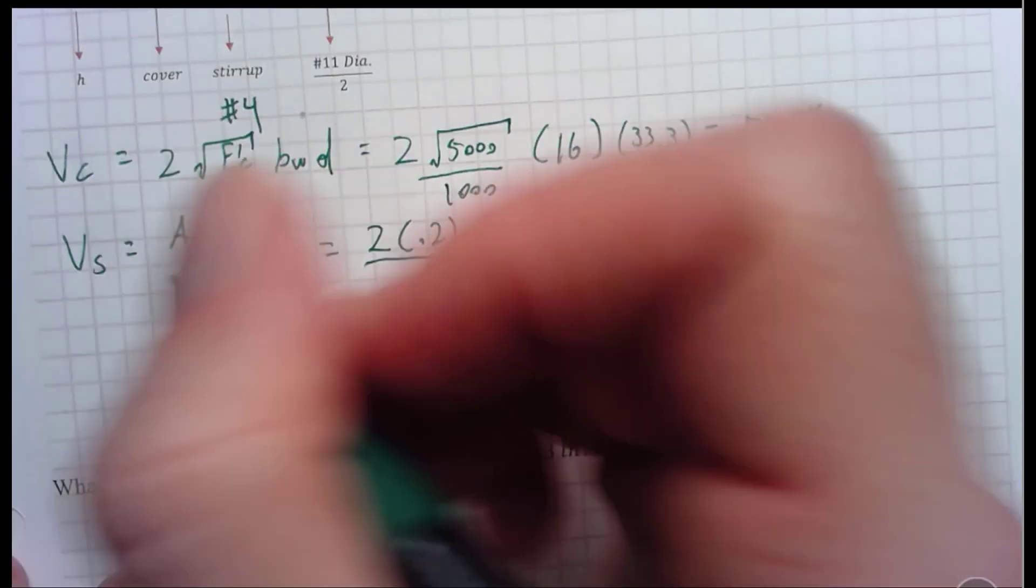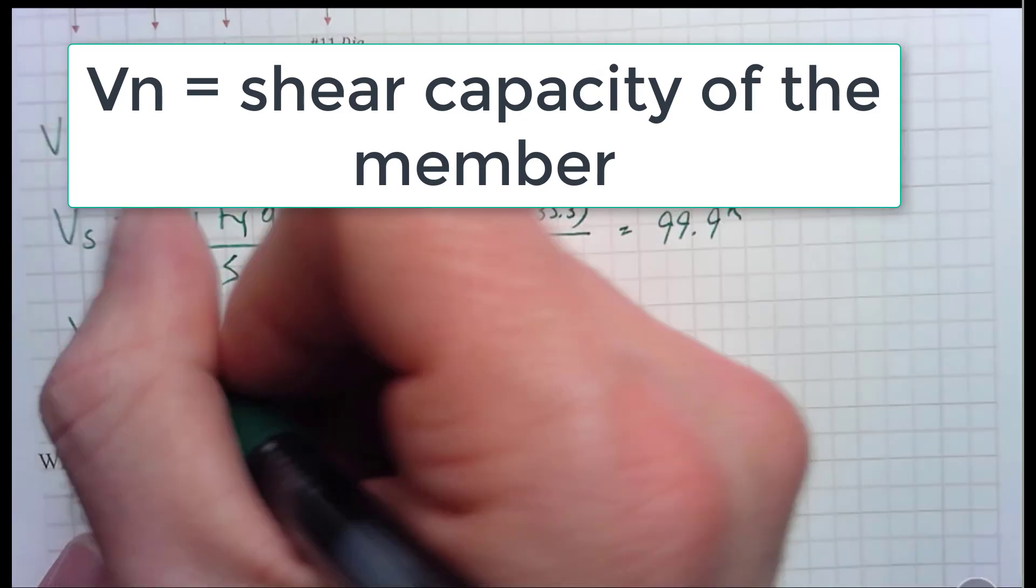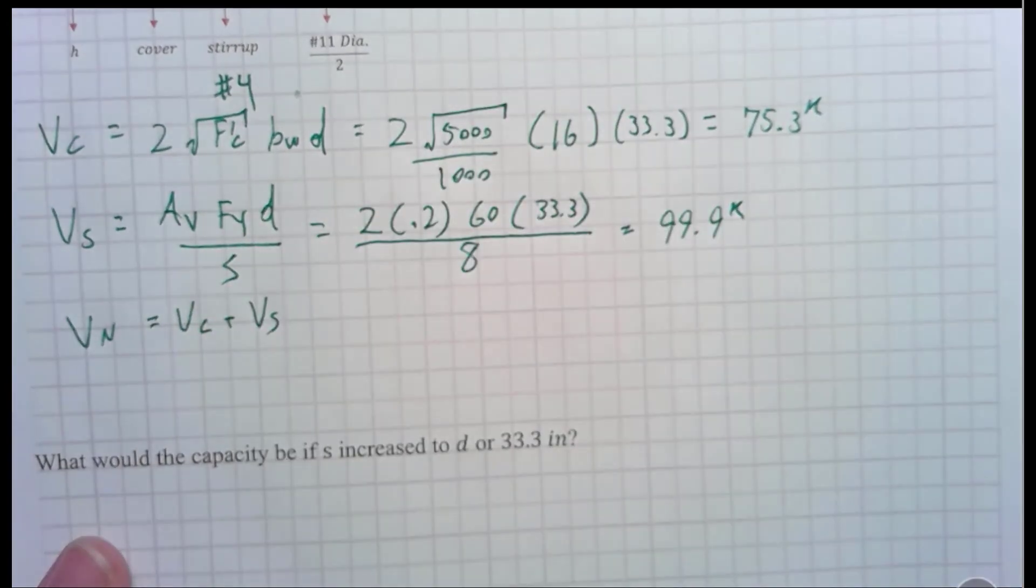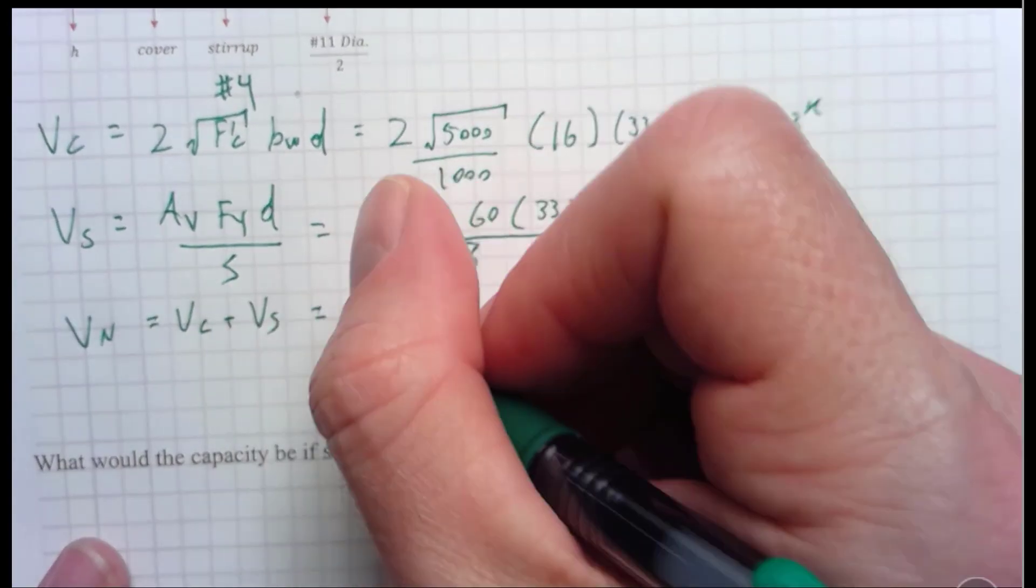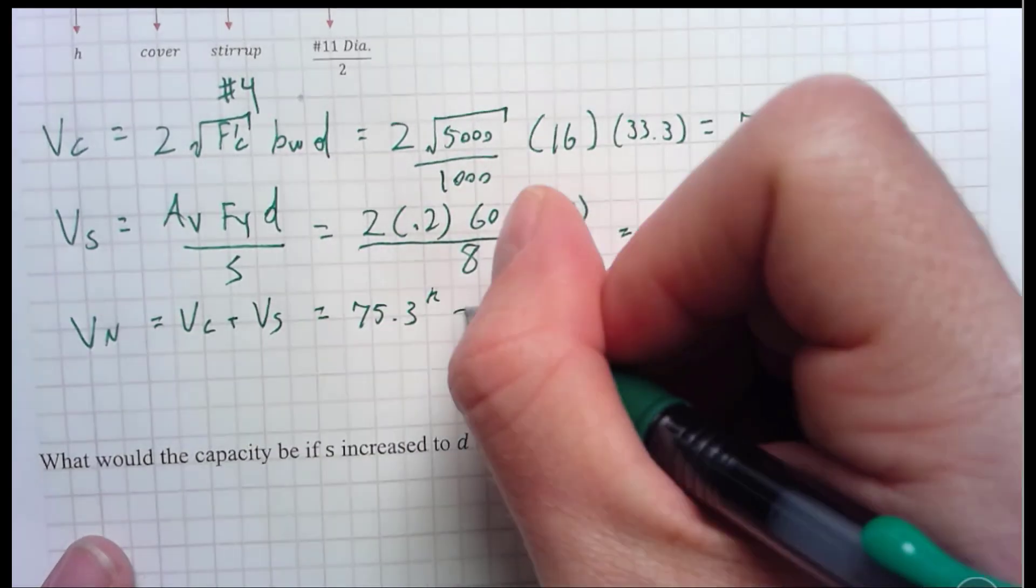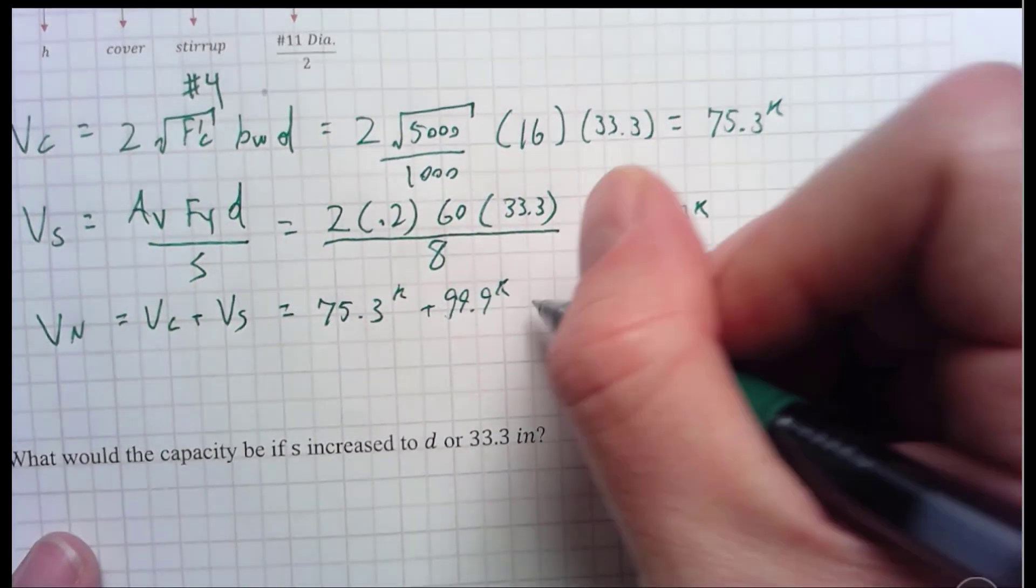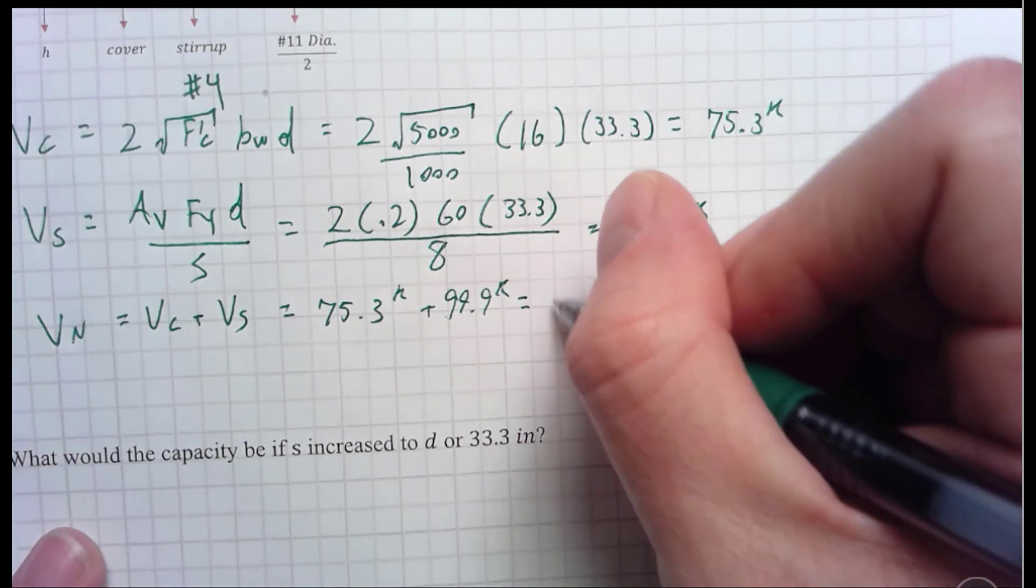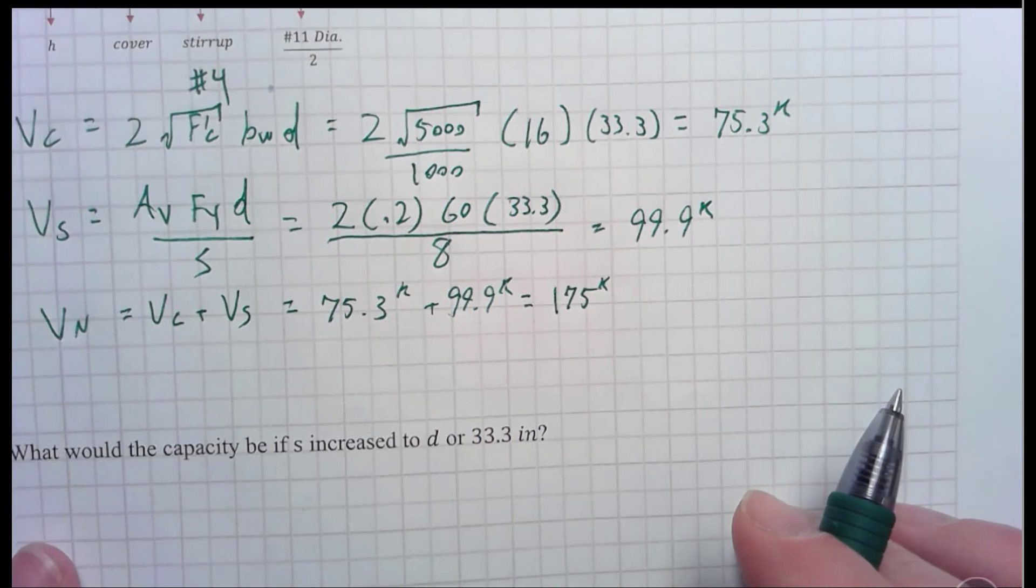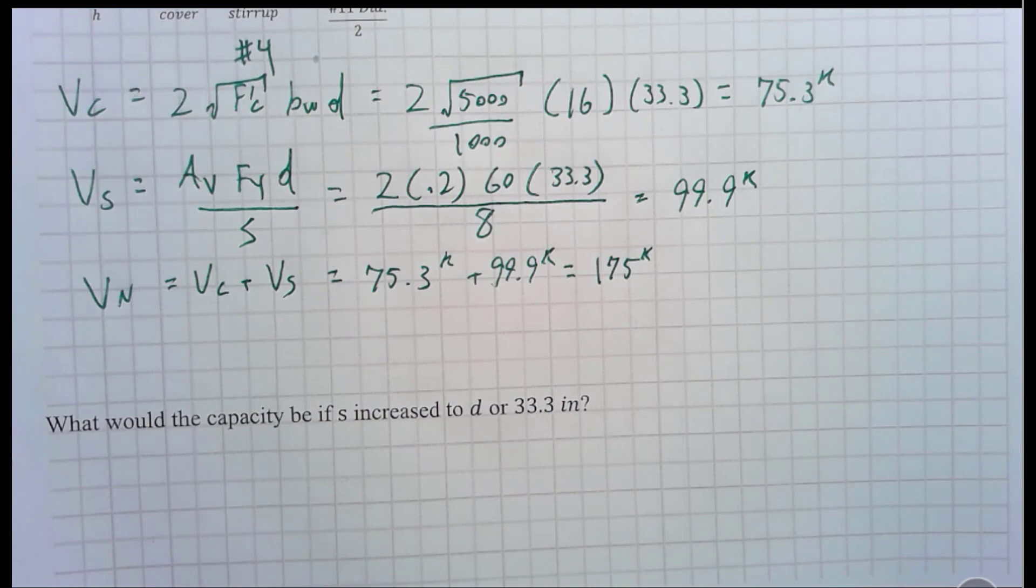Now, what we have to do is we have to find our V sub N, that's the capacity of the member, is equal to V sub C plus V sub S. And that is equal to 75.3 kips plus 99.9 kips, and that whole thing together is 175 kips. Oh, cool. Well, now I've got to figure out which case I'm in. Case? You don't remember what I'm talking about? Well, this is in the notes.